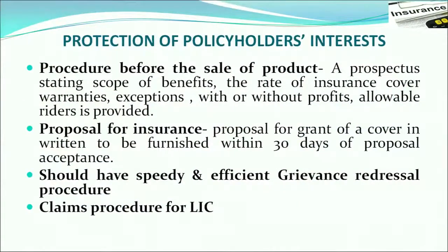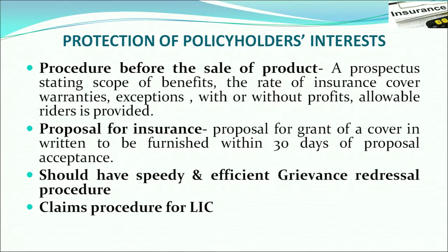Let us first understand what is the procedure before the sale of a product. A prospectus stating the scope of benefits offered with the insurance cover includes the warranties, exceptions, with or without profits, and allowable riders. These are all the details provided before the sale of the product and would be mentioned in the prospectus.